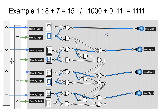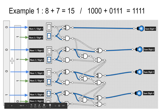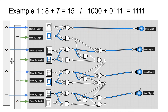The other example: 8 plus 7 is 15. Eight is 1000 and seven is 0111. The output is the largest number you can store in four-bit binary, which is 15 — and there it is: 1111. All four digits have been represented.